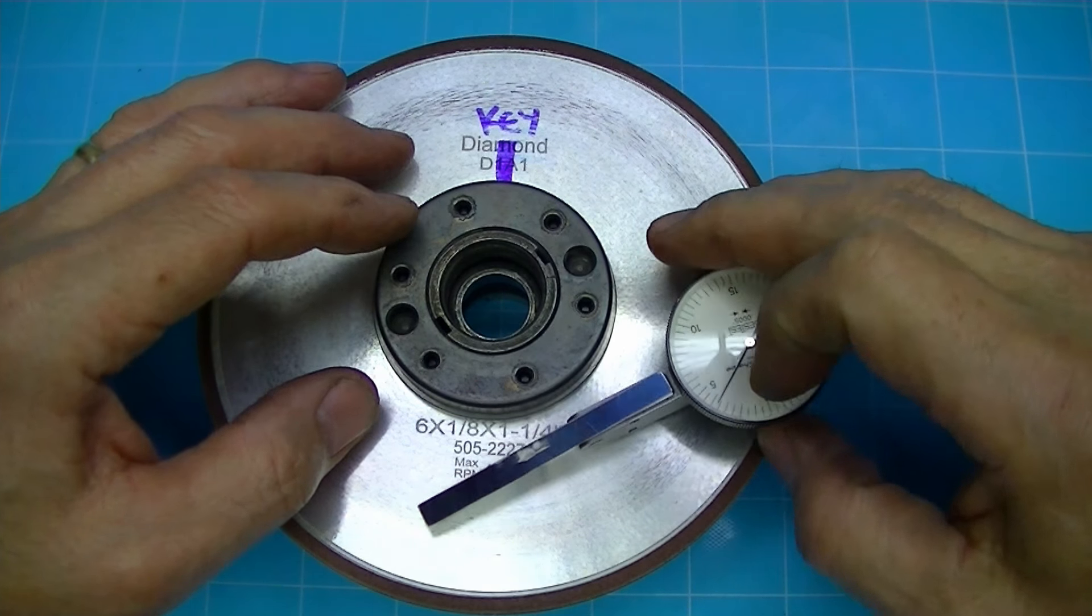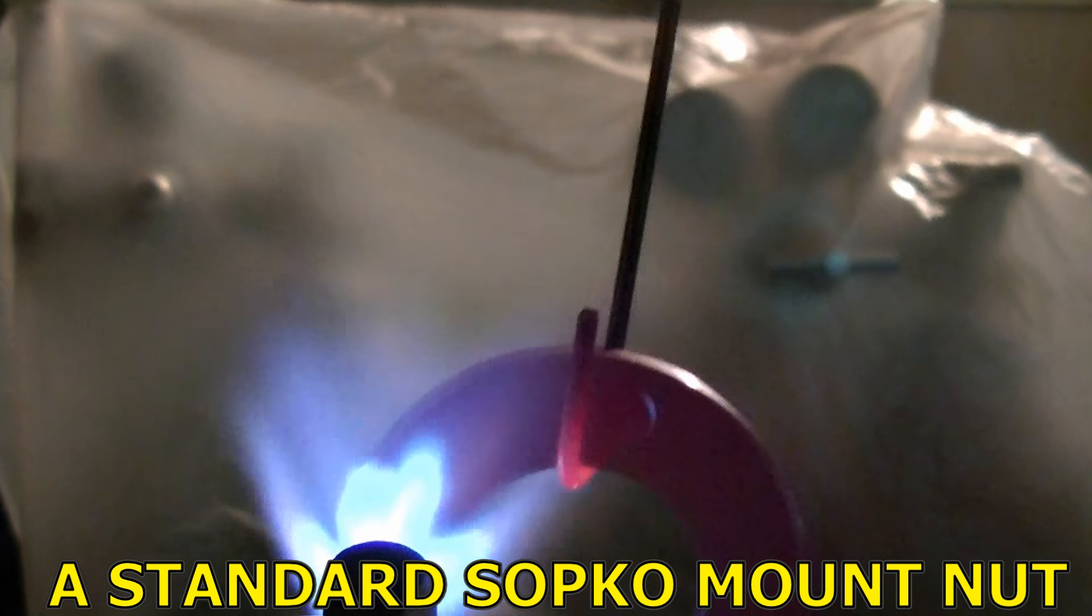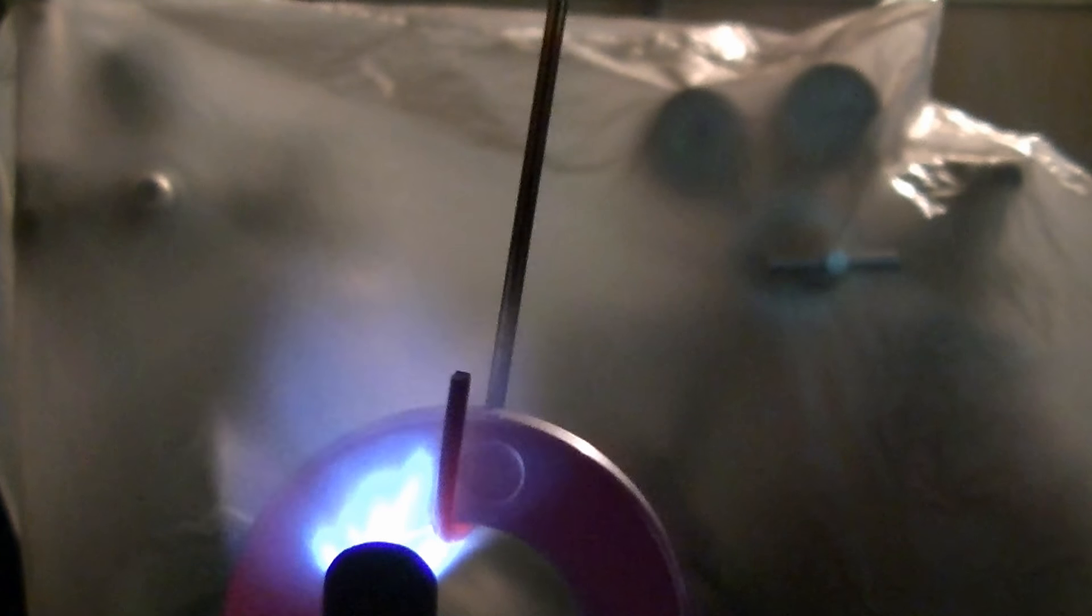I'm taking this up to cherry red to temper it back to make it drillable. It's pretty hard to begin with. So I will slowly back away from the flame once I get this fairly hot so it doesn't chill off too quick.